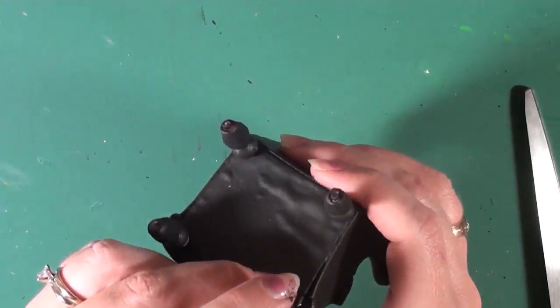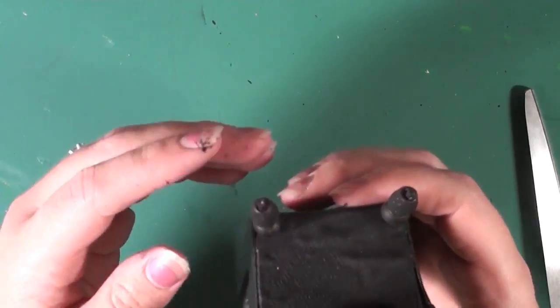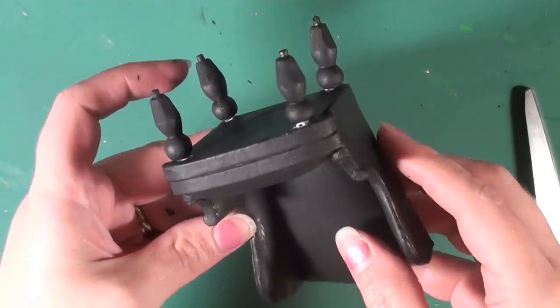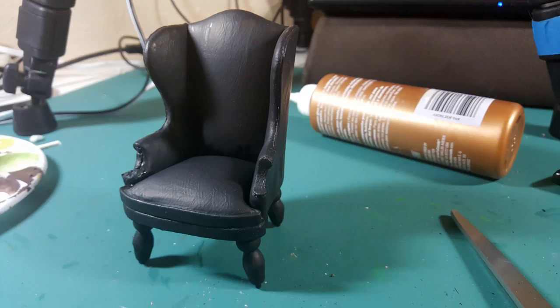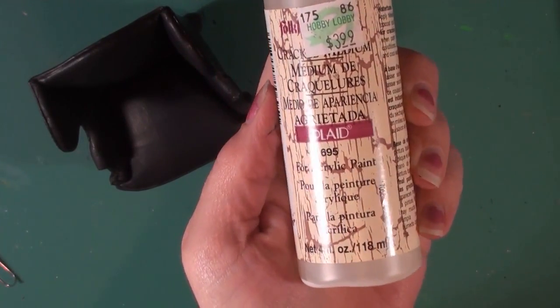So after I get all four legs in I'm just going to position them. Make sure that they are even. There's not one kind of falling off to the side in a weird way. And I'm just going to let that dry. I'm just going to sit it down. Like I said before the best thing you can do is let it dry.